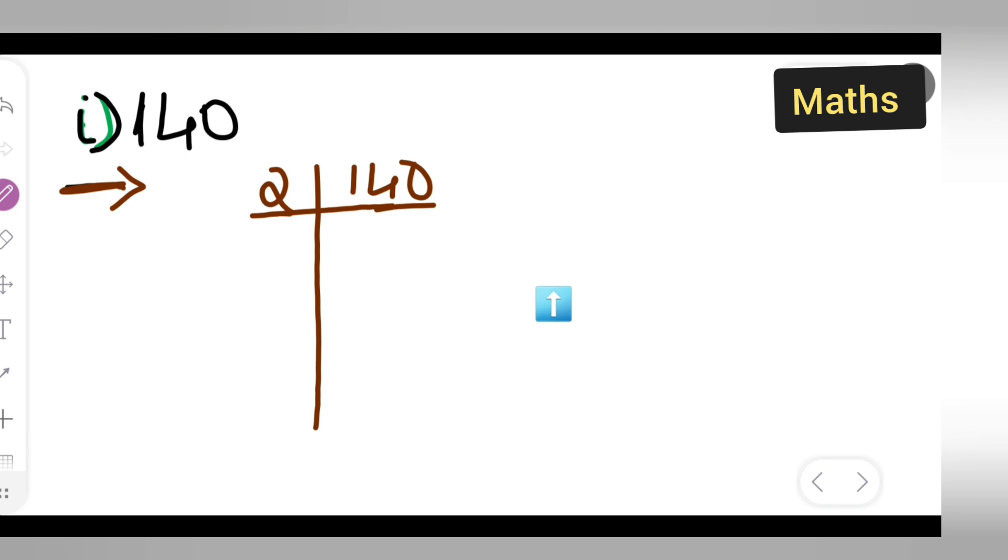For 140, 2 times 7 is 14 and 2 times 0 is 0. Next, I'll take the table of 2 again because 70 is an even number, so we can use this number. 2 times 3 is 6.